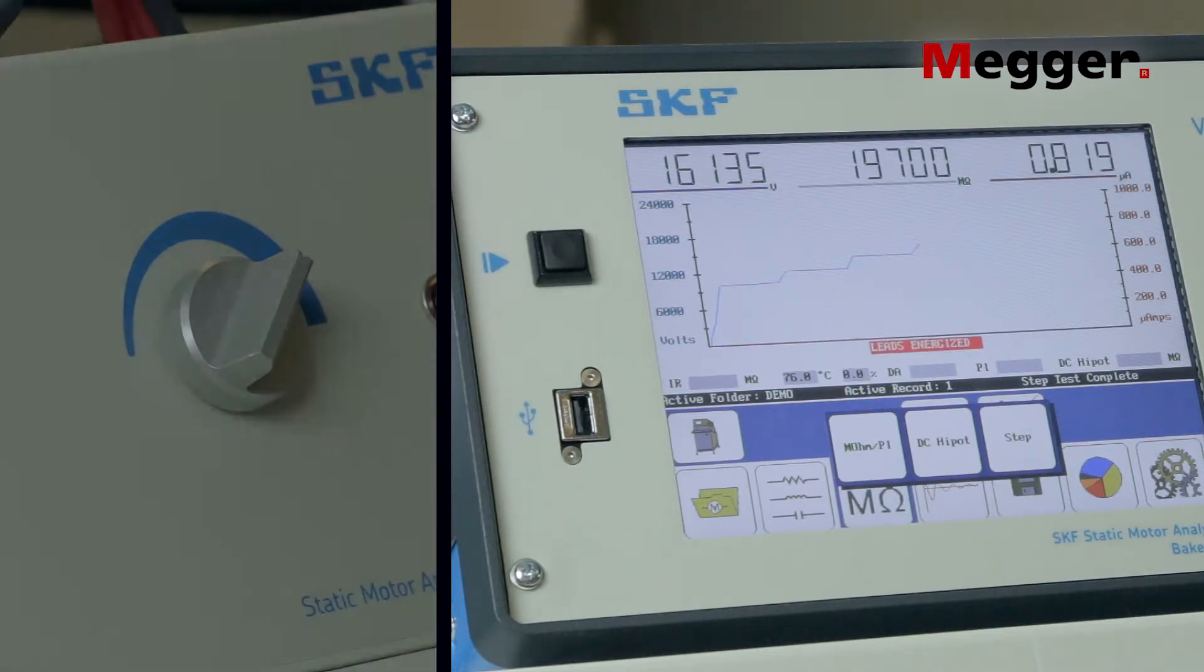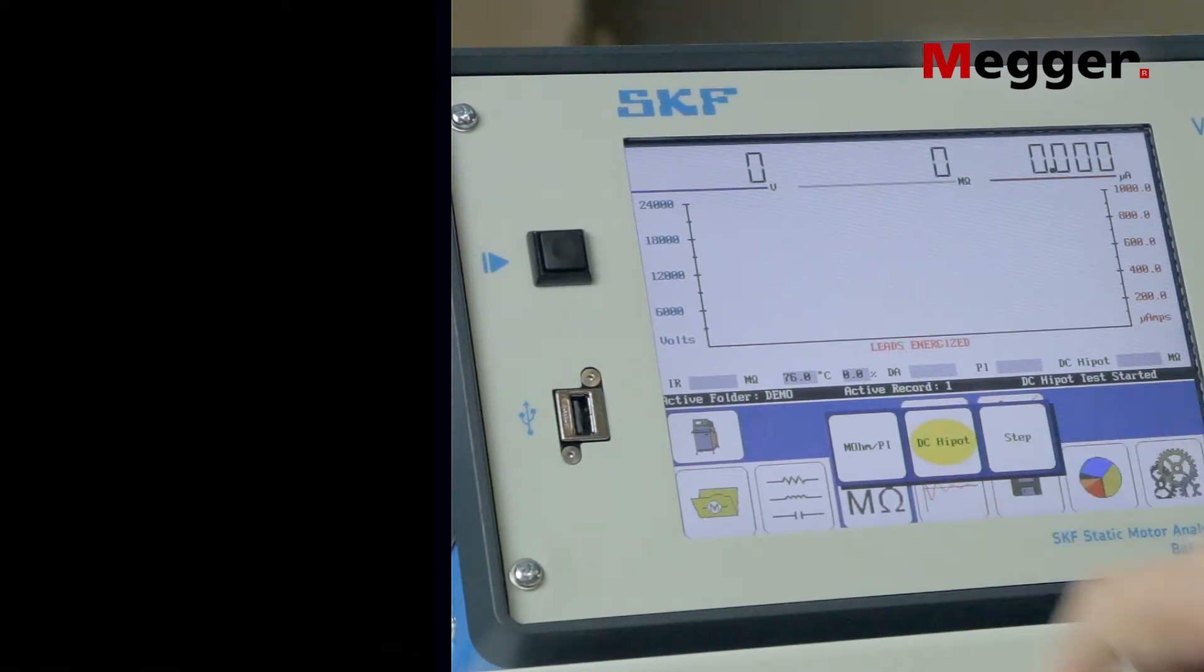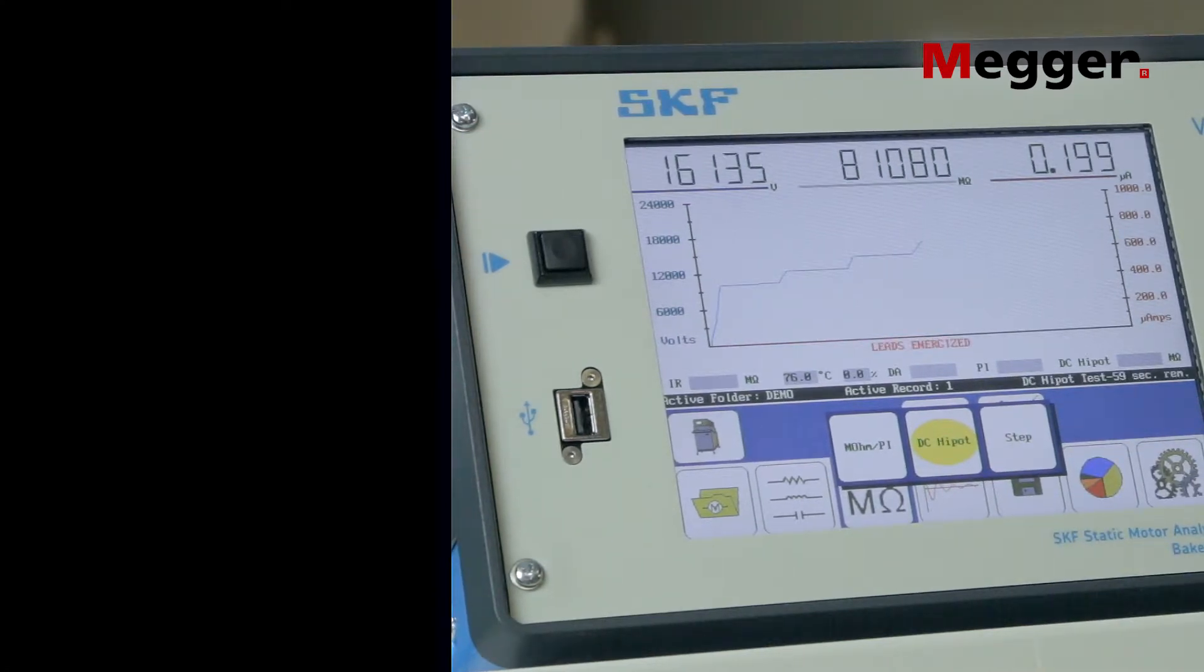However, when you reach your final test voltage, press DC HIPOT instead of step. Again, this test will last for one minute by default.